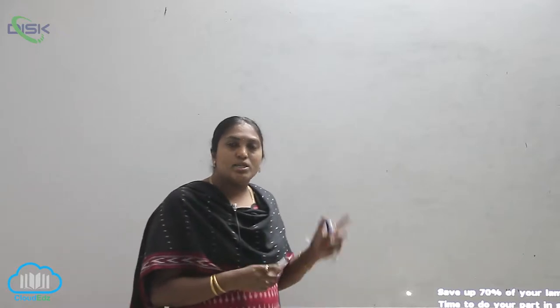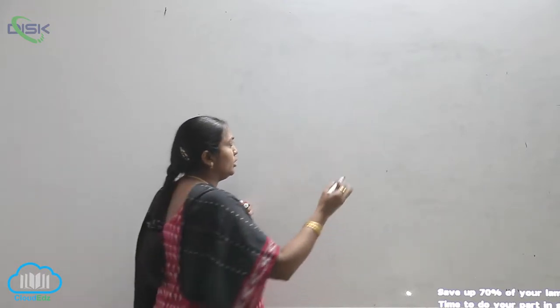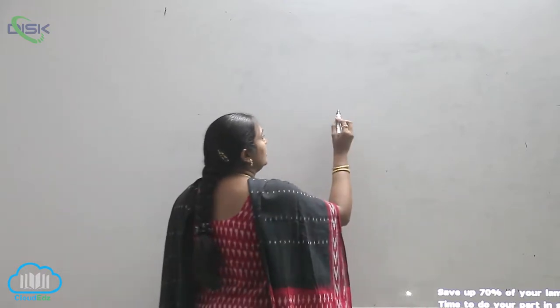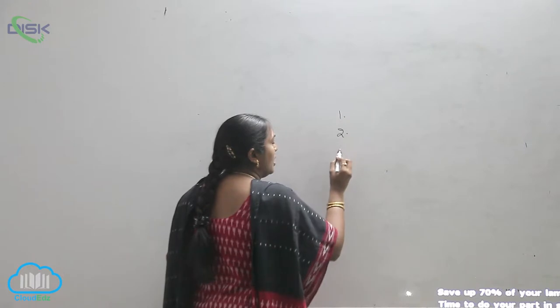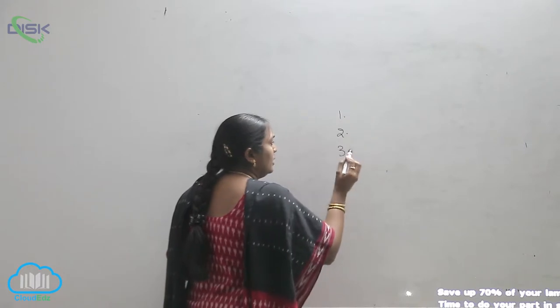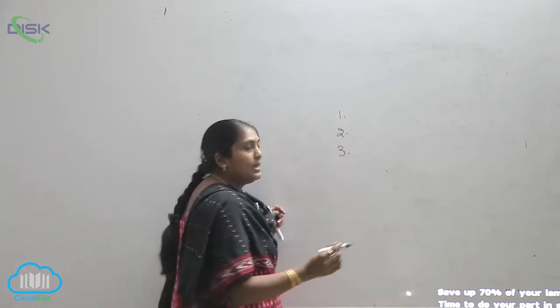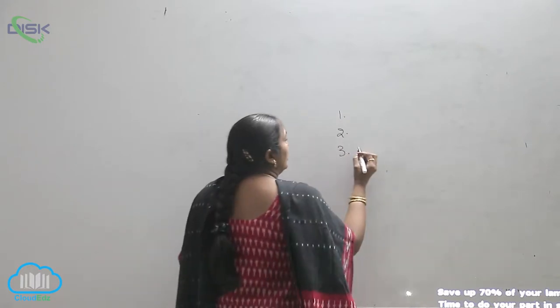As I have just told you, the female reproductive system is a pear-shaped structure, is it not? So, the three regions which are present here...